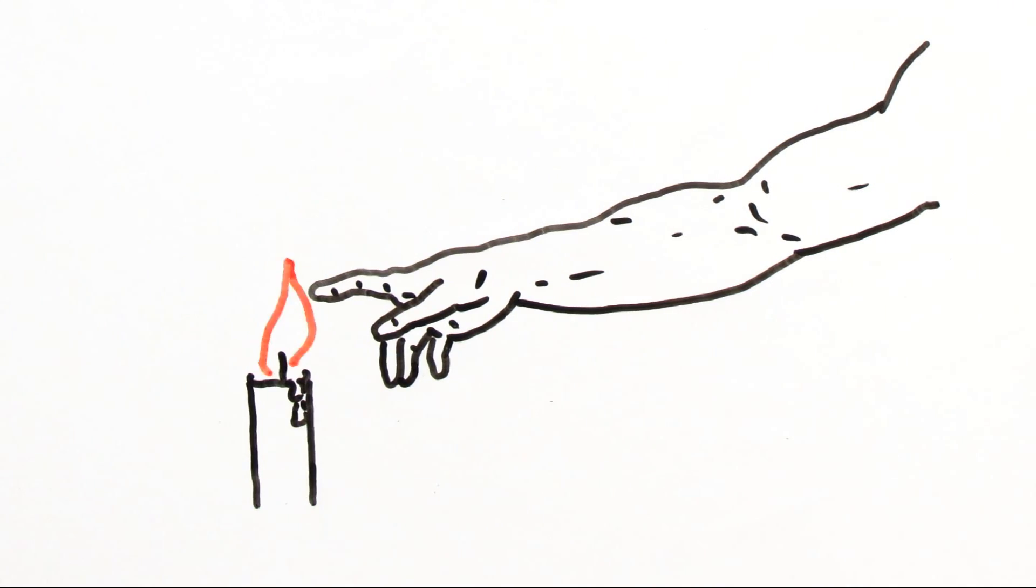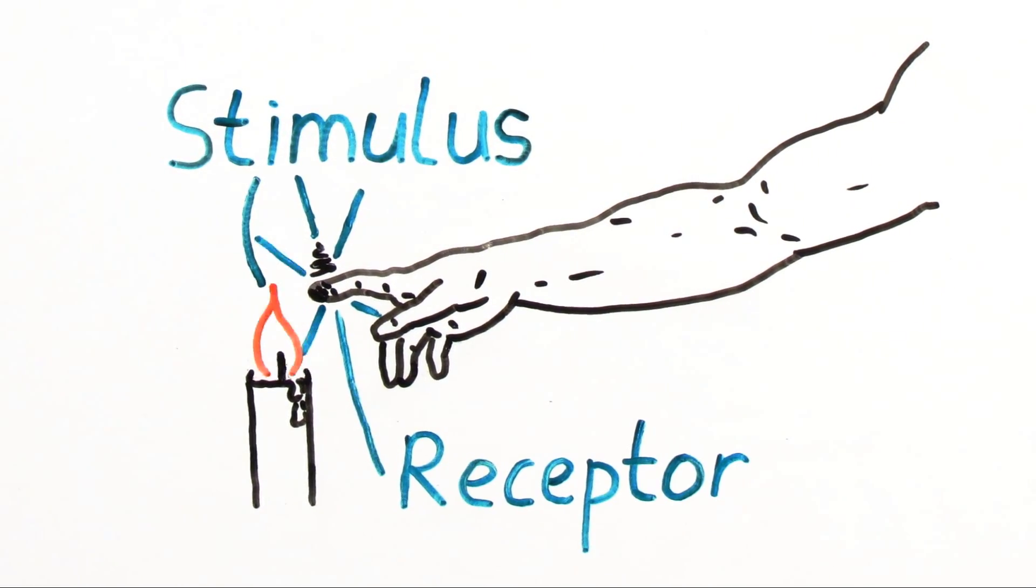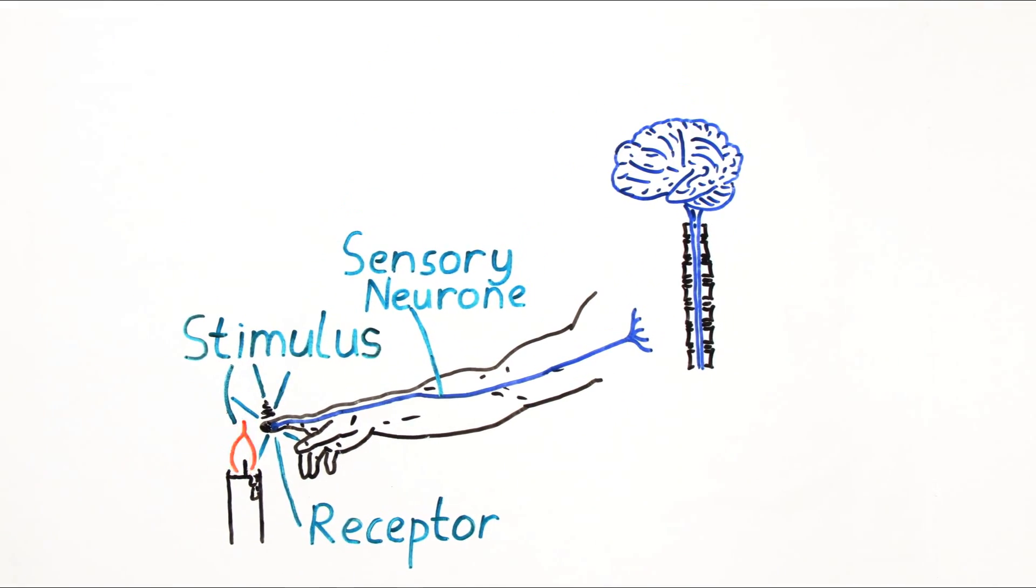As an example, we'll take what would happen if you were to touch a hot object. Here we'll take a candle flame. As your finger approaches the candle flame, receptors in the tip of your finger detect the heat. The receptors send that information down a neuron towards the central nervous system. The type of neuron which is used for sensing information and dealing with sensory information is called a sensory neuron.